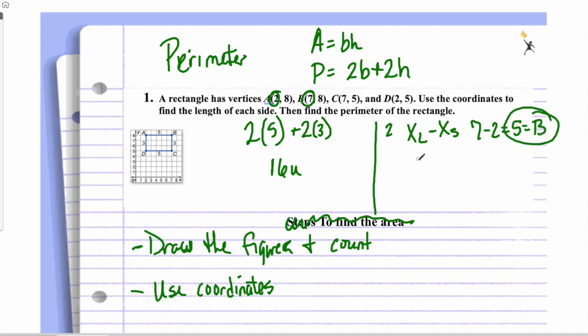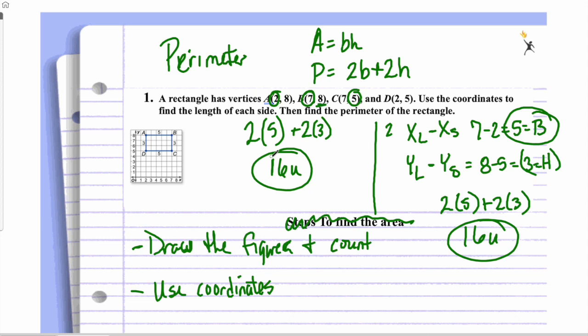And then I take my y-values, again, my larger y-value minus my smaller y-value, and that's going to give me 5 and 8, so 8 minus 5. That gives me 3, and that's my height. So then I, again, plug it back into the same formula, and you'll see we get twice 2 times 5 plus 2 times 3 gives me that 16 units. It's the exact same answer as I got from counting or from drawing it.